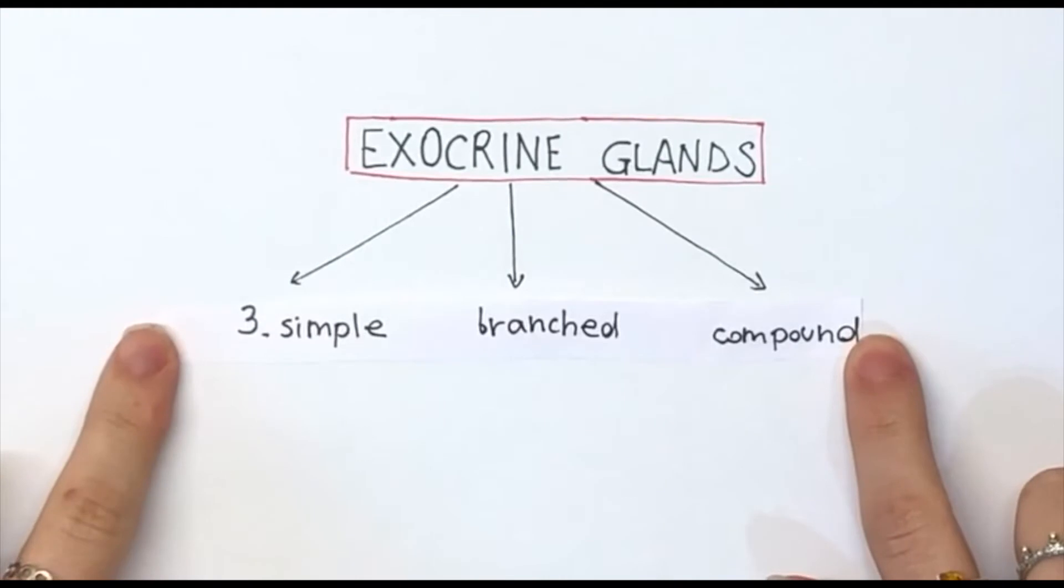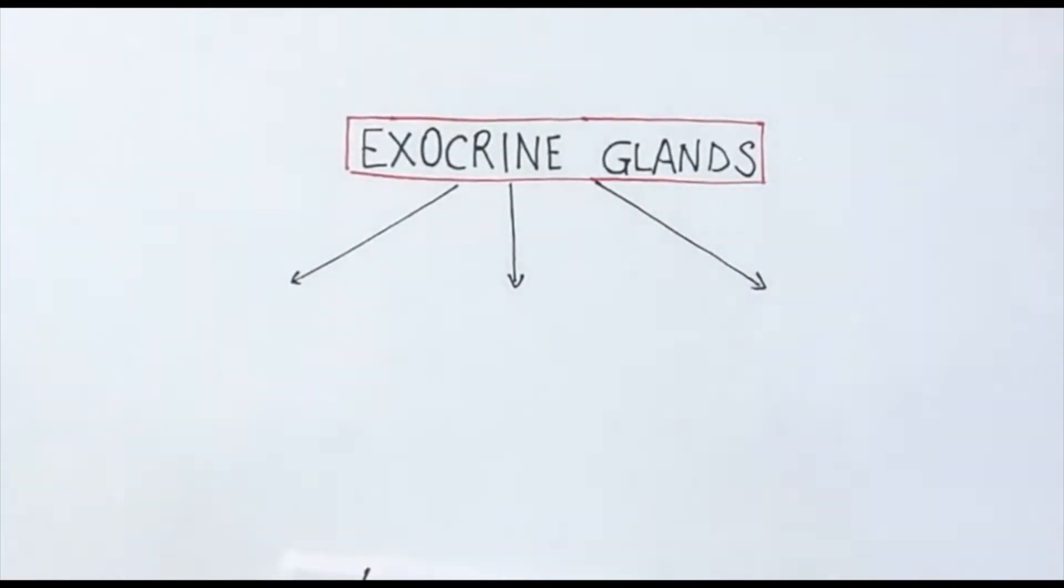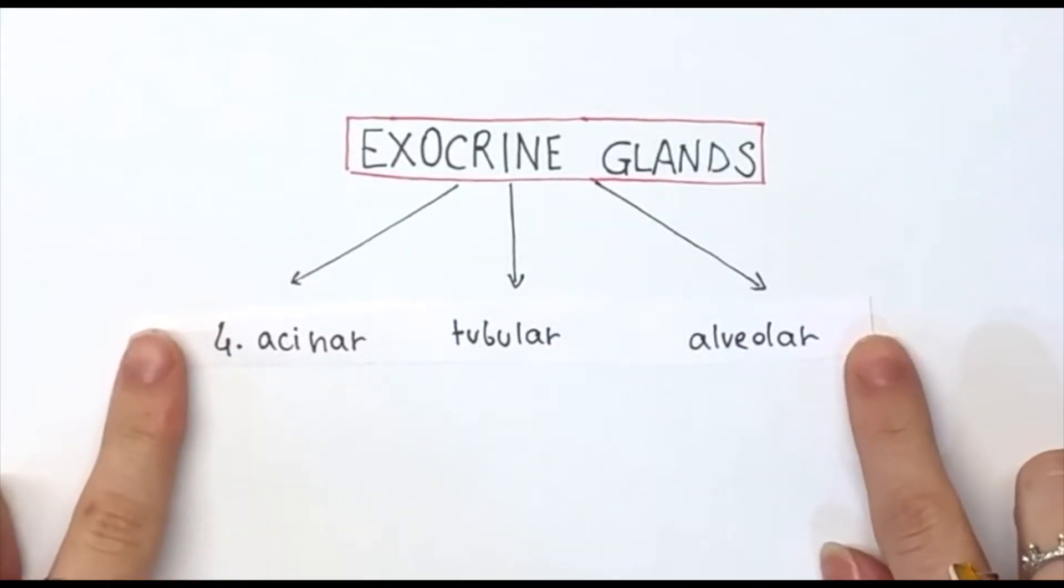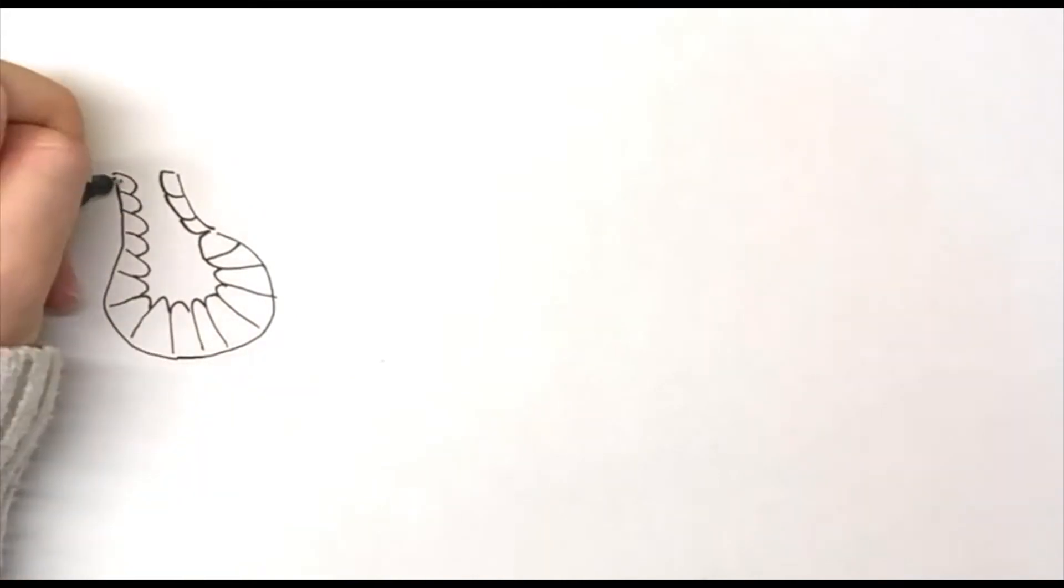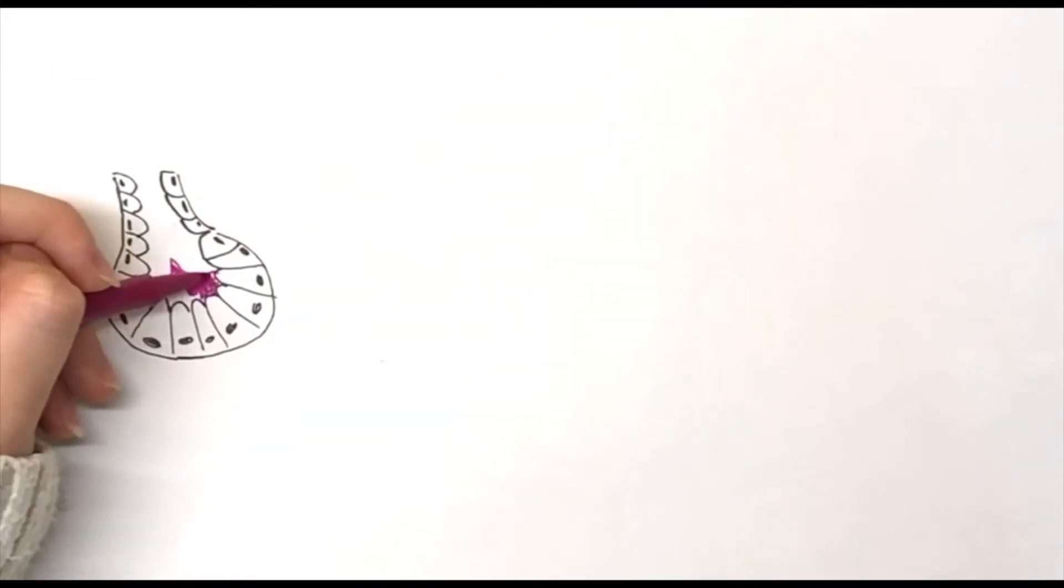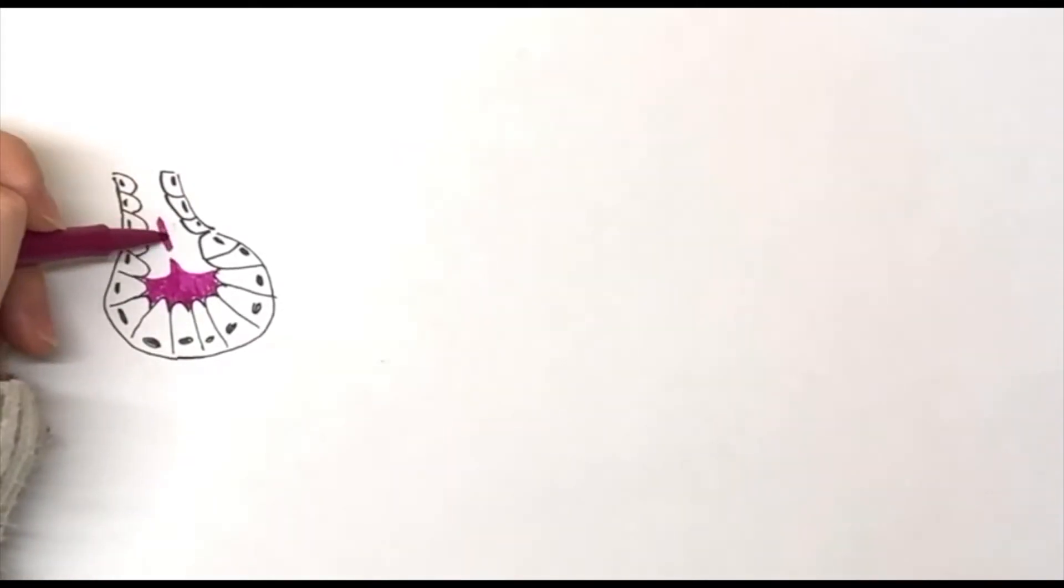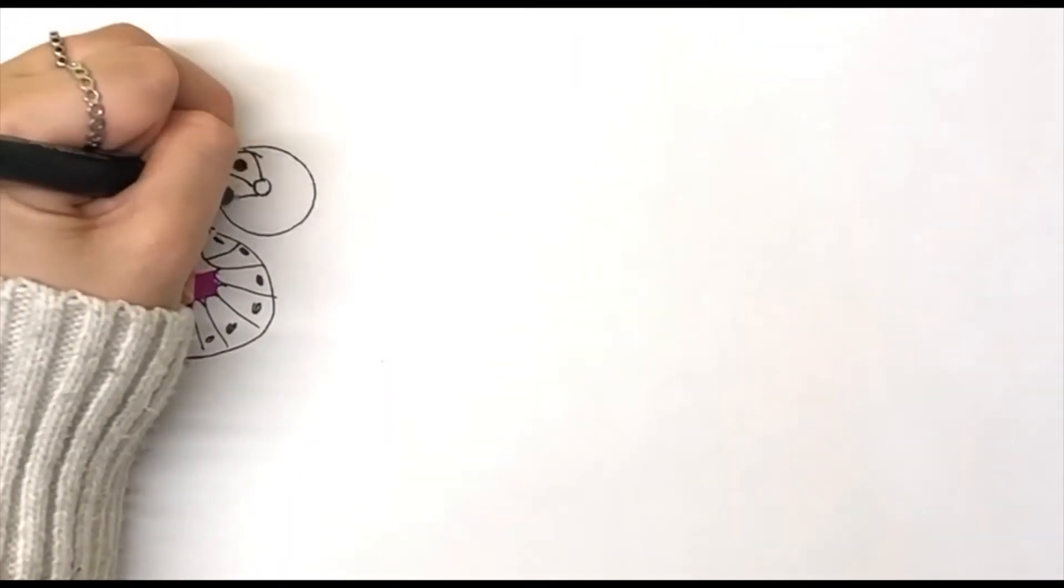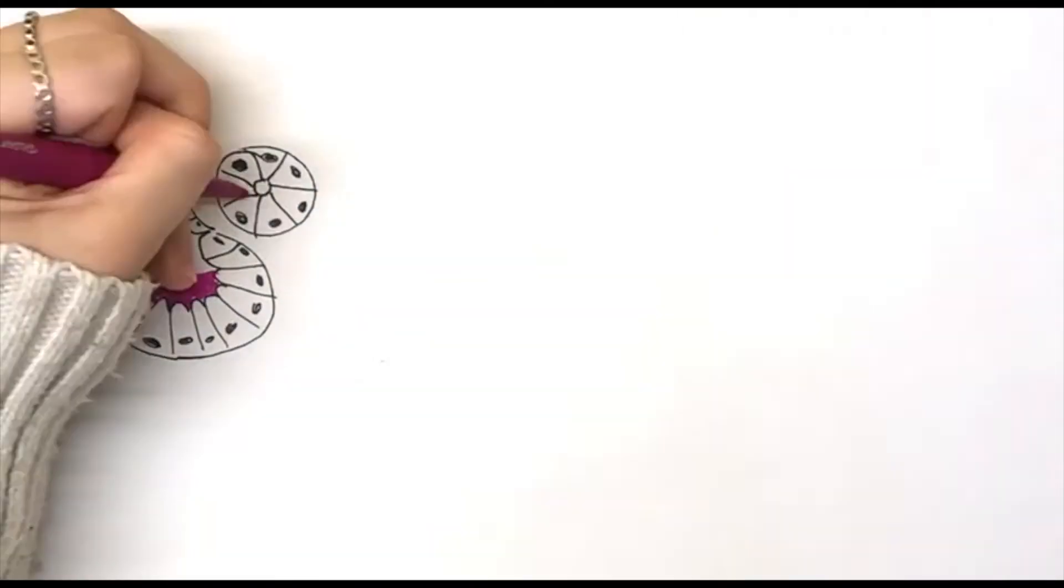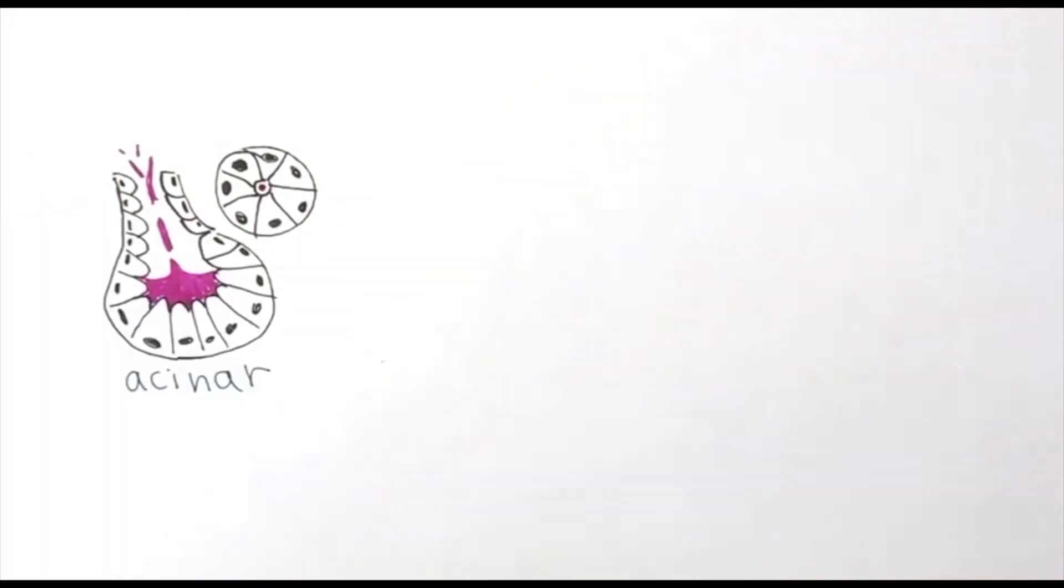A secretory unit consists of a group of epithelial cells which are arranged to secrete their products into a lumen connected to a duct. In the body there are different types of secretory units. An acinar secretory unit has a spherical shape. Its products are fluid and have a proteic nature. In cross-section the lumen appears narrow with the single cells having a pyramidal morphology and round nucleus.